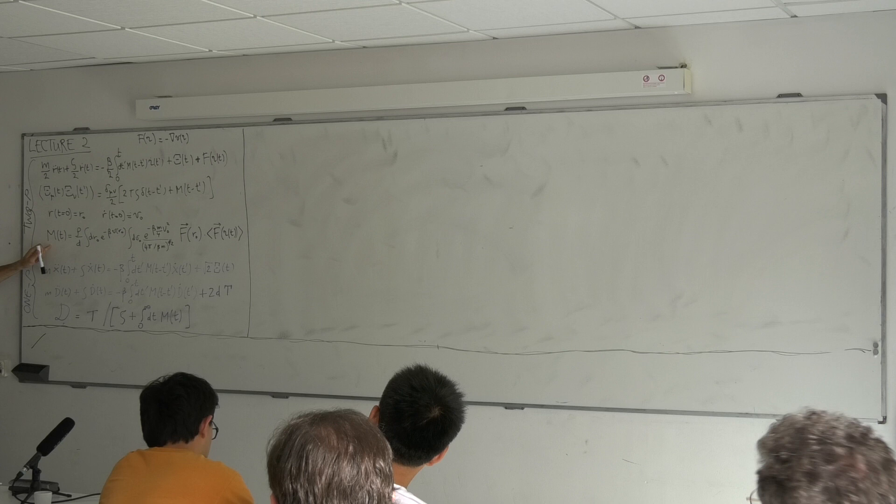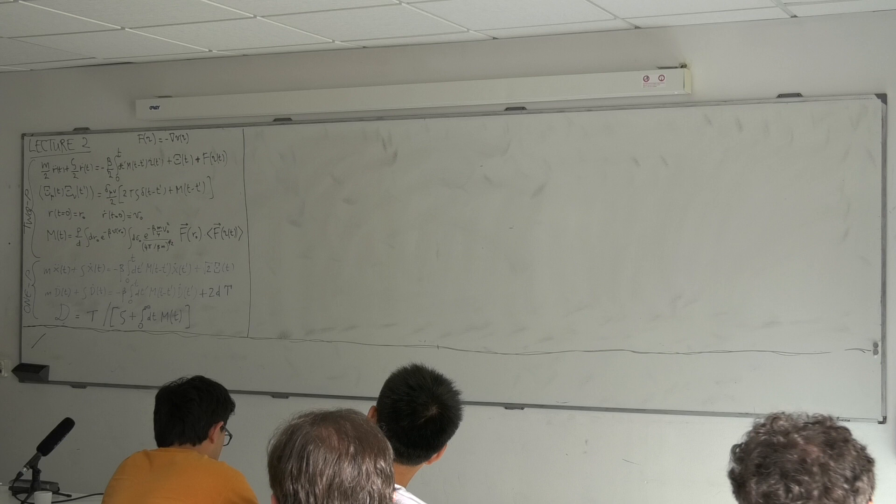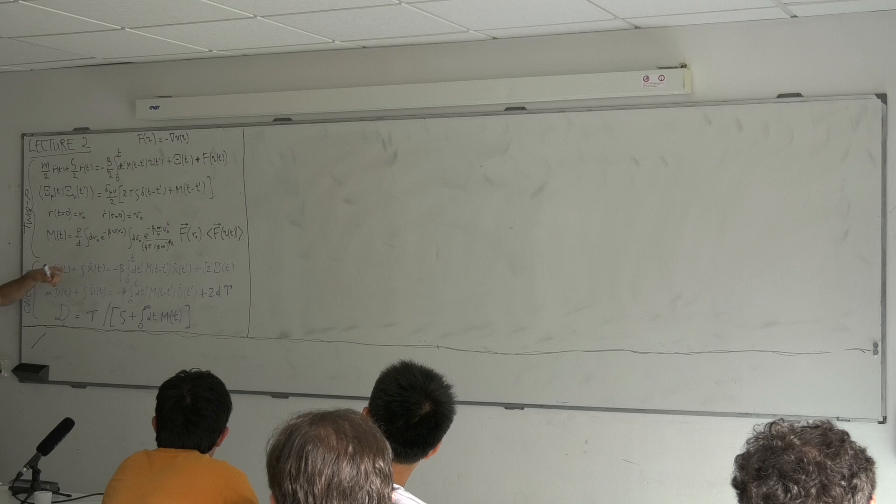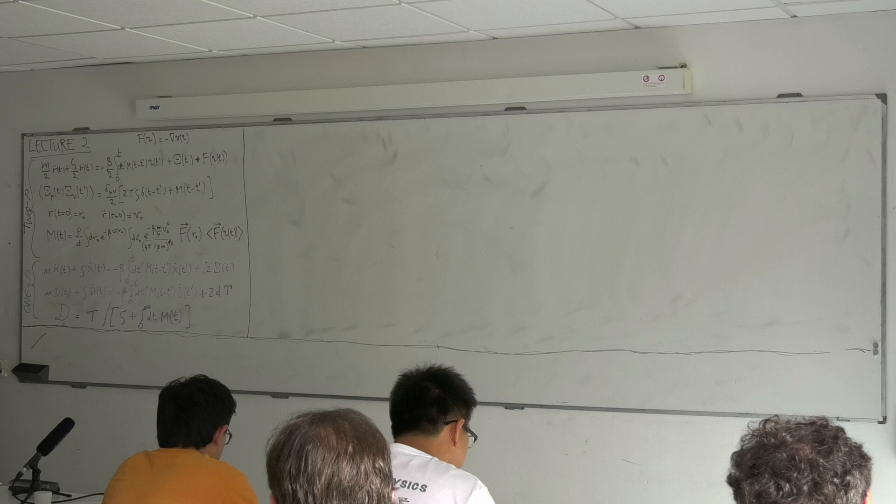If I am able to solve this, I get m. Once I have m, I can look at just one particle. If I look at just one particle, the position x of the particle has a very similar equation, except that there is no force, because the force is included in 2m. Here I put a square root of 2.